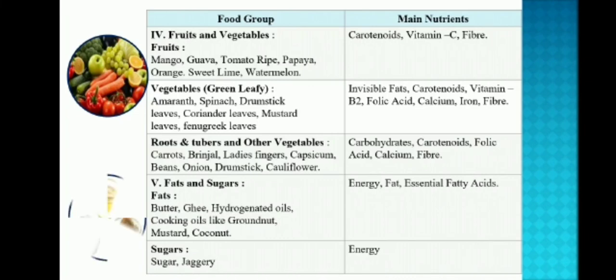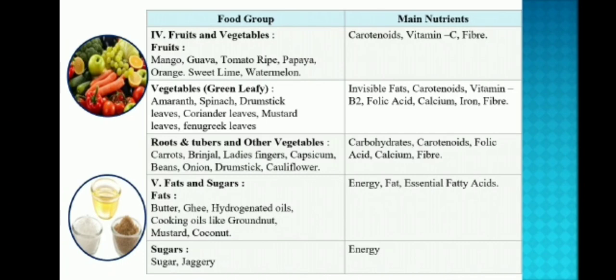Coming to the fifth group, fats and sugars: butter, ghee, hydrogenated oils, cooking oils like groundnut, mustard, coconut oil. These contain nutrients like energy, fat, and essential fatty acids. Sugars and jaggery contain only energy.